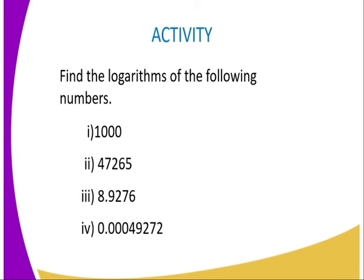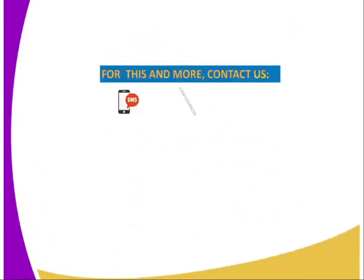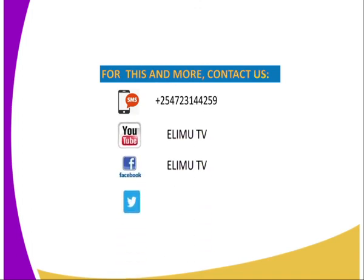We have come to the end of today's lesson. You are supposed to carry the following work as an assignment: Find the logarithm of the following numbers — Roman 1: 1000, Roman 2: 47,265, Roman 3: 8.9276, and finally 0.0049272. For reference, you can refer to Secondary Student Mathematics Book 2, published by the Kenya Literature Bureau. For more information, you can reach us through SMS, YouTube, Facebook, and Twitter at ErimoTV underscore KE. Thank you for joining me in this lesson. Till next lesson, bye-bye.